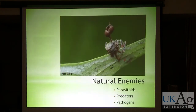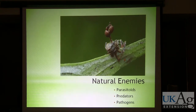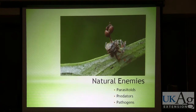The third category are pathogens. I won't cover these in this presentation, but I wanted to at least mention them. These include fungus, bacteria, nematodes, viruses, and those sorts of things. Those are also very important natural enemies of insect pests in the landscape. Here, this is an ant that's been consumed by this really bizarre-looking fungus.